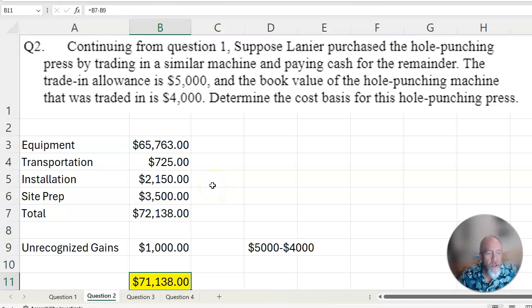We can move right on to question 2, which takes question 1. We get $5,000 for the piece of equipment in the machine, but we have a book value on it of $4,000. So what does that mean? It means you got an unrecognized gain of $1,000 from that trade-in allowance.